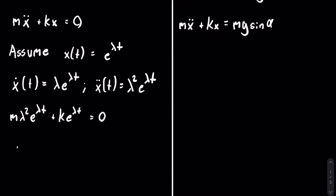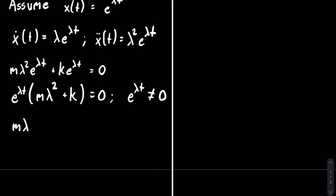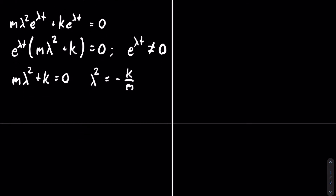We can then factor out e to the lambda t. Because it is exponential, e to the lambda t will never equal zero. This means that m lambda squared plus k must equal zero, so lambda squared equals negative k over m. Taking the square root of both sides, lambda equals plus or minus the square root of negative k over m, which equals plus or minus i times the square root of k over m.